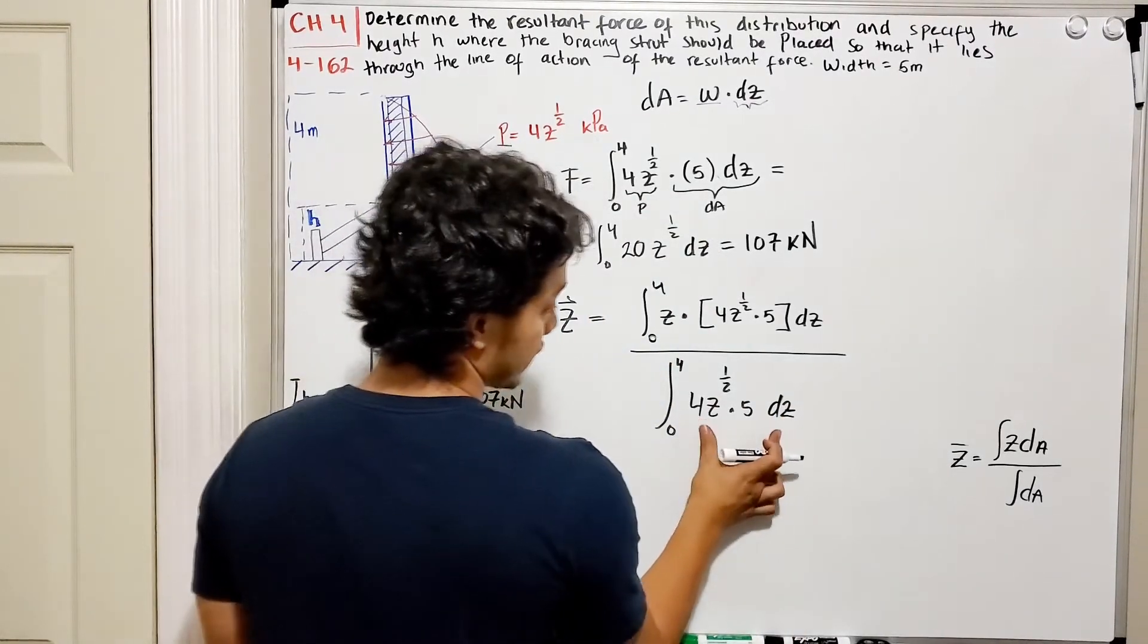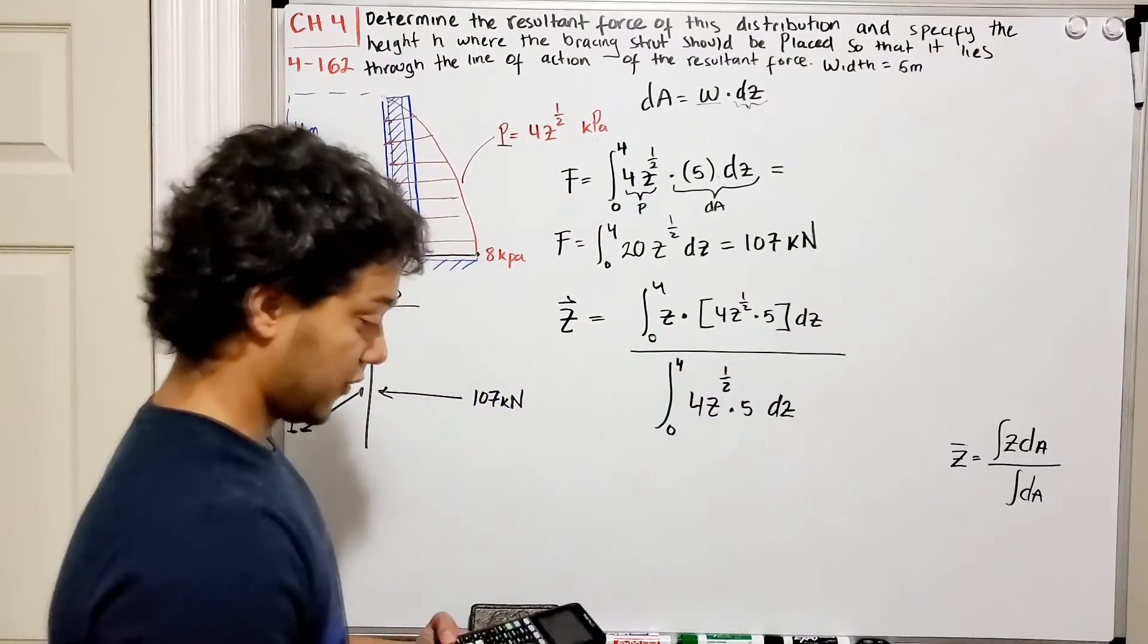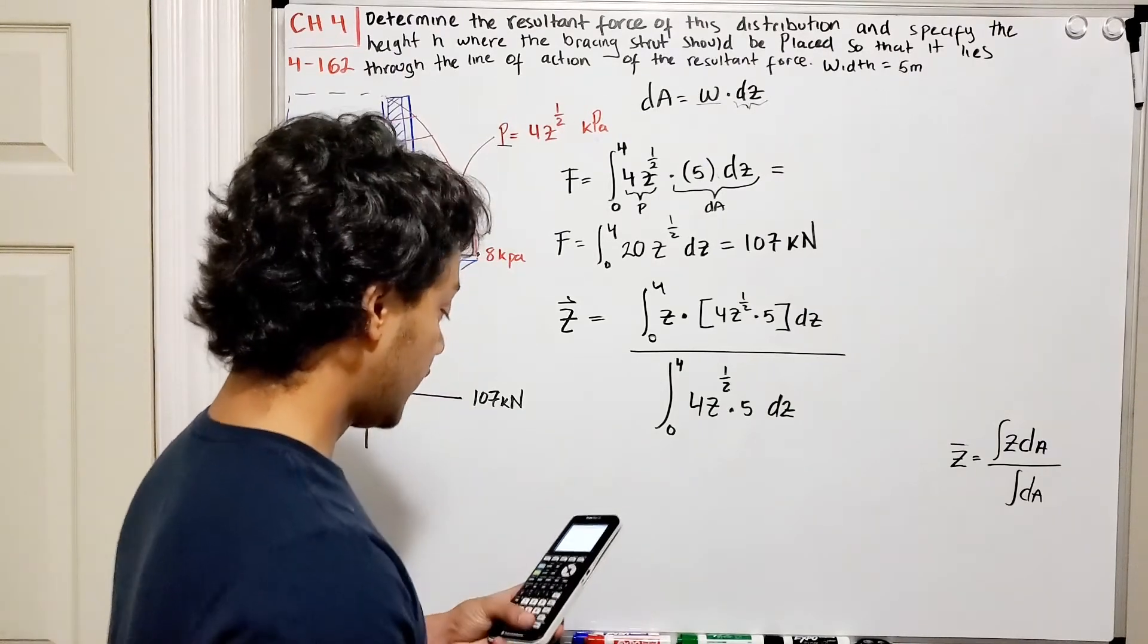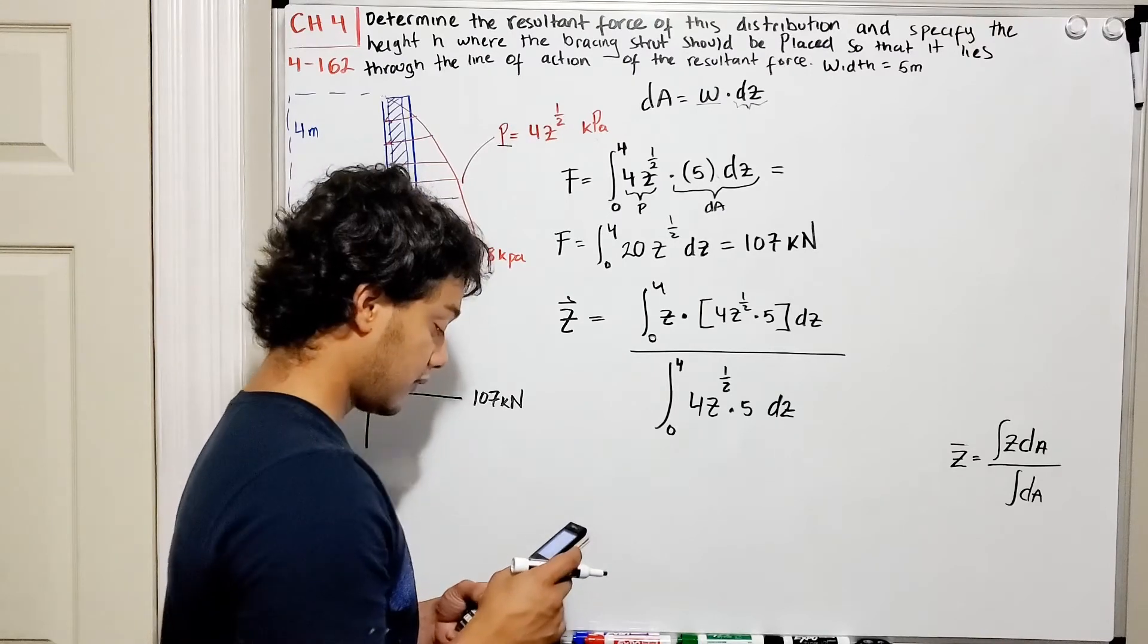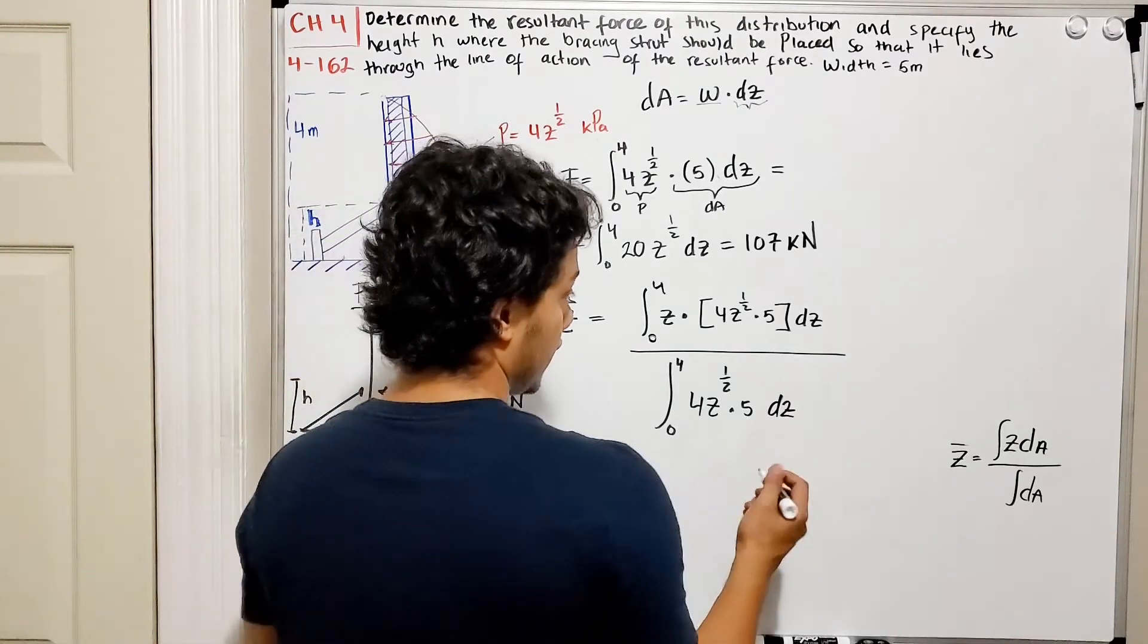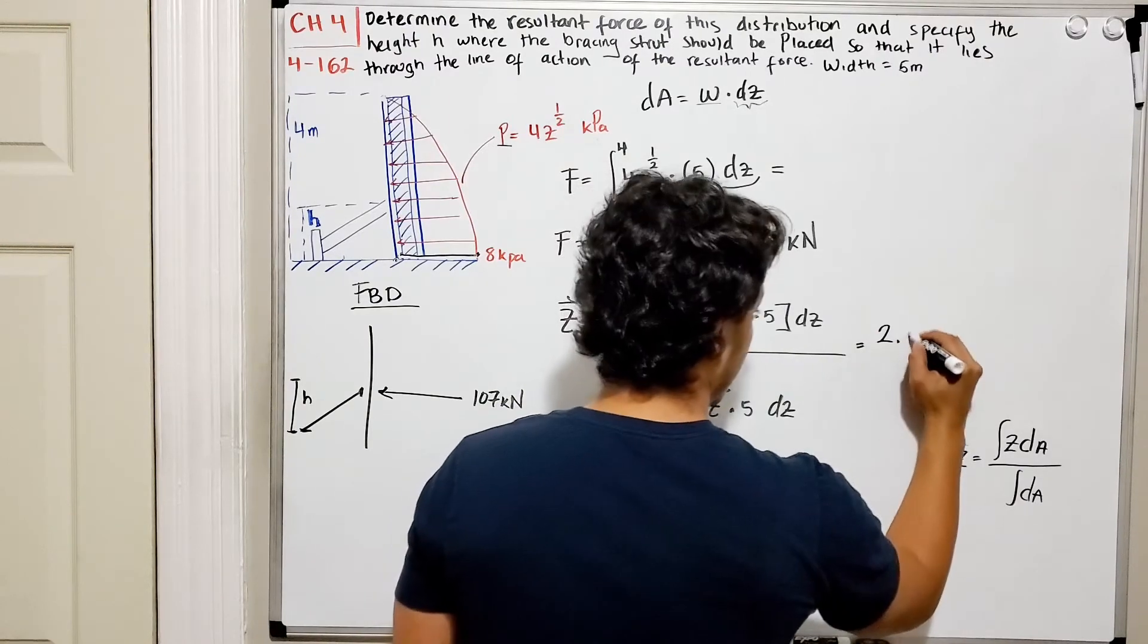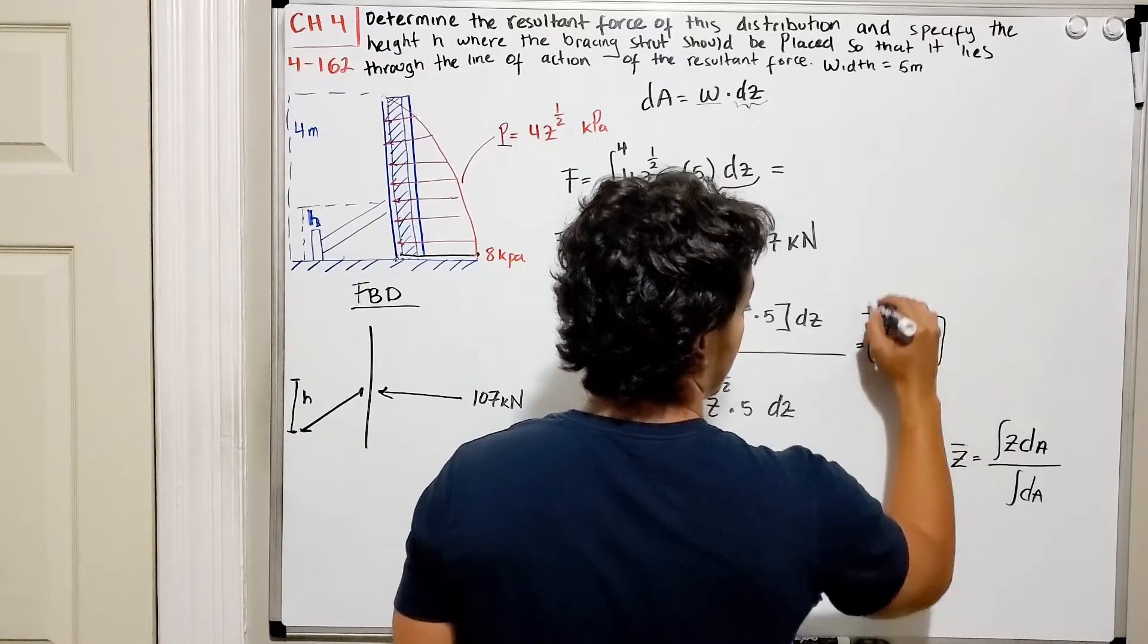If we do this on our calculator, we will find out that this is going to be equal to, so we do the integral of the top divided by the integral of the bottom, is equal to 2.4 m.